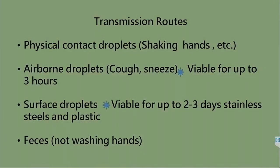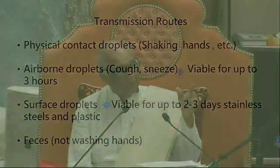Surface droplets — they can cough on iron, on steel, and the virus is viable for up to two to three days on stainless steel, plastic, and cardboard. Also, for some people who go to the washroom and don't clean their hands properly, it is present in the feces as well. So in summary, the transmission routes are: physical contact, airborne droplets, surface droplets, and feces.